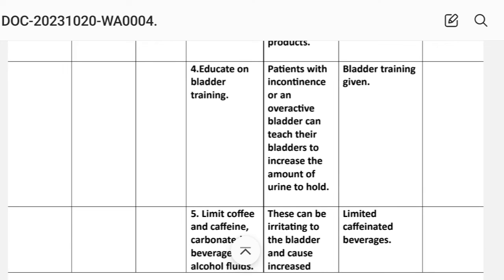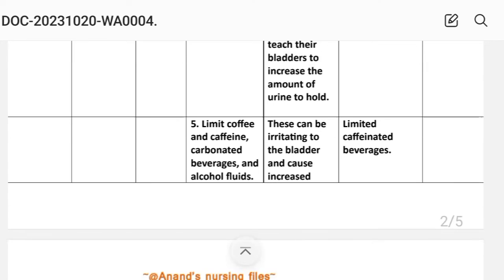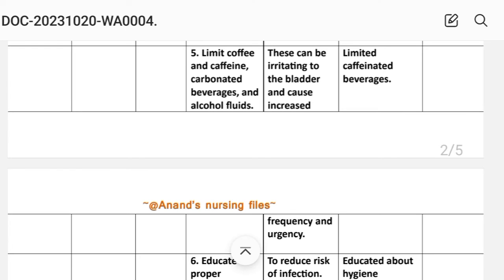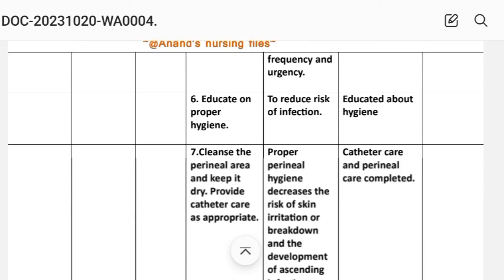Intervention 4: Educate on bladder training. Rationale: Patients with incontinence or an overactive bladder can train their bladder to increase the amount of urine they can hold. Implementation: Bladder training given. Intervention 5: Limit coffee, caffeine, carbonated beverages, and alcohol. Rationale: These can irritate the bladder and cause increased frequency and urgency. Implementation: Limited caffeinated beverages.